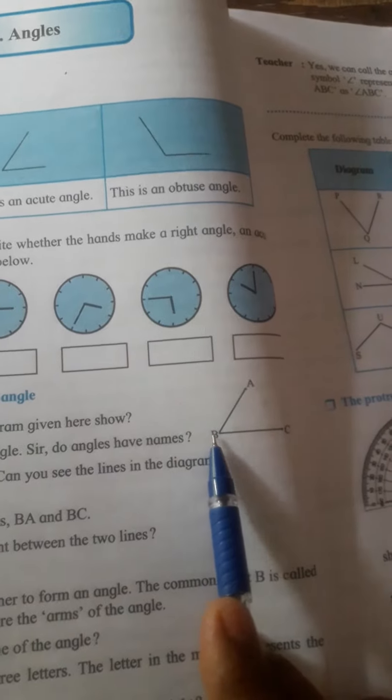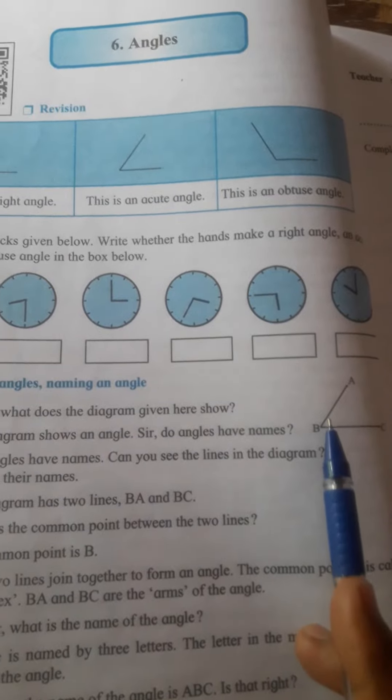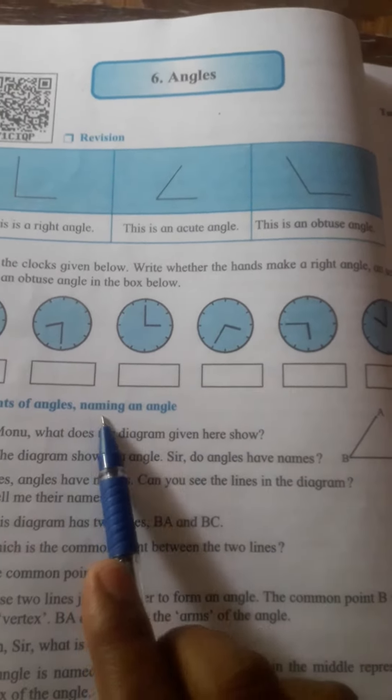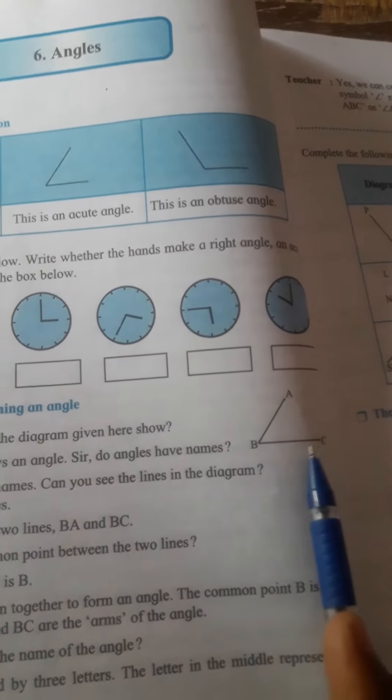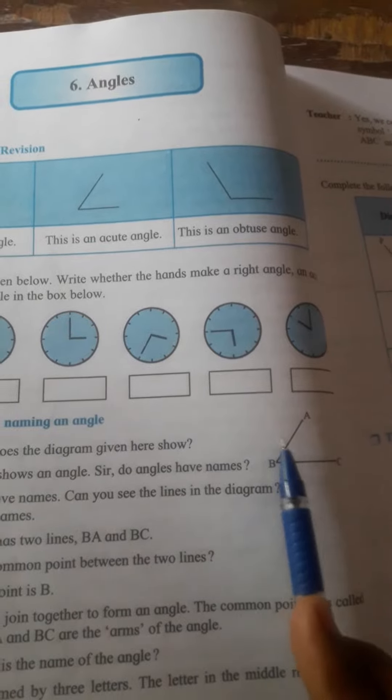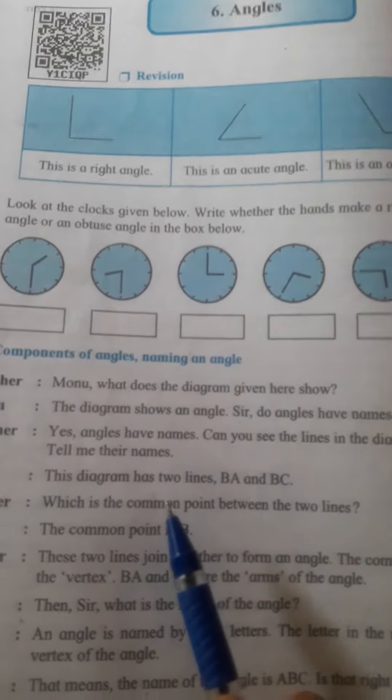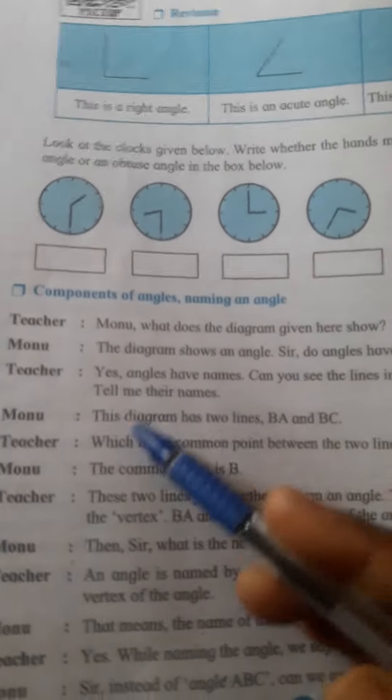the vertex. It has some particular angle, and for naming we read it as angle ABC or angle CBA. In both ways we can read an angle.